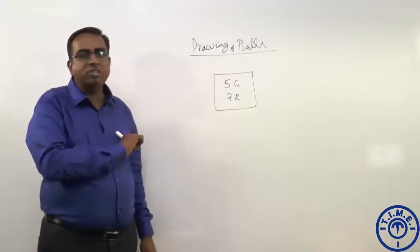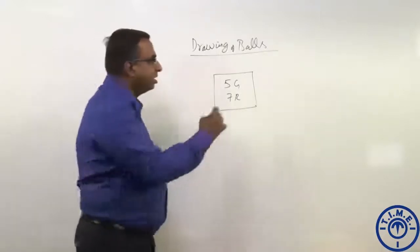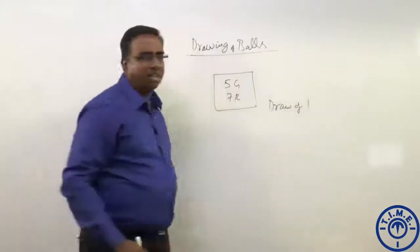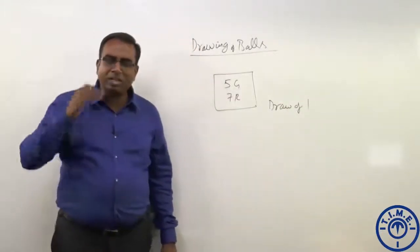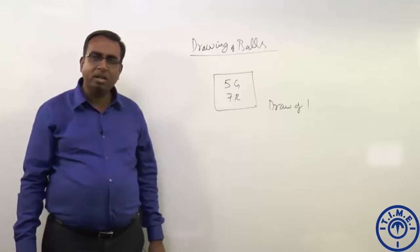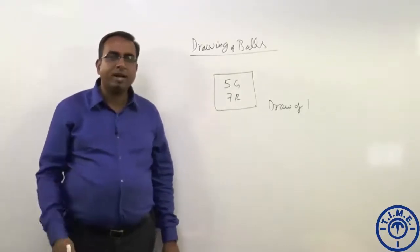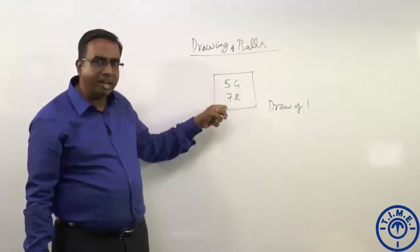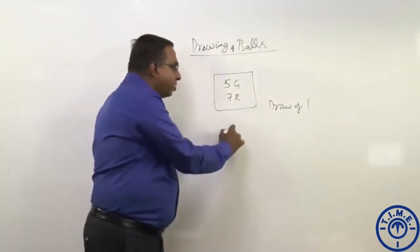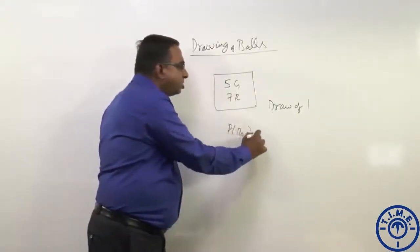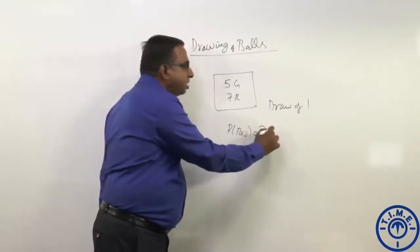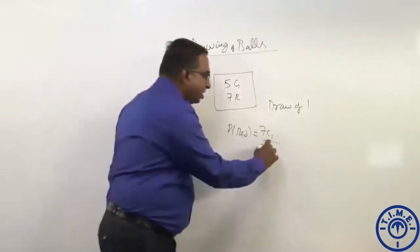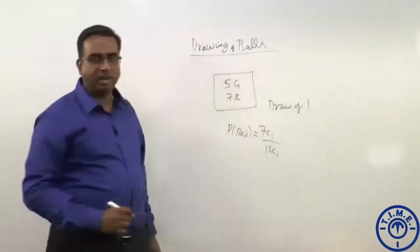Suppose the experiment is draw of 1. If the experiment is draw of 1, what are all the questions that can come to our mind? What is the probability of the ball being red in color? The probability of drawing a red ball will be 7C1 by 12C1, which is 7 by 12.